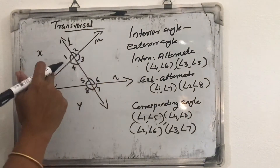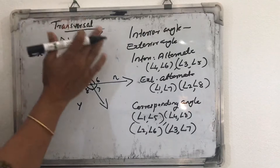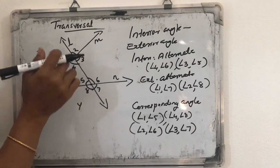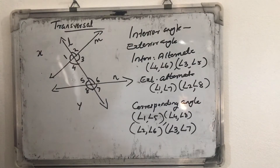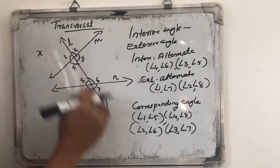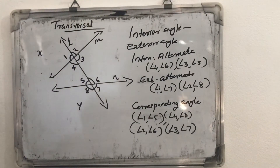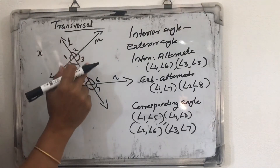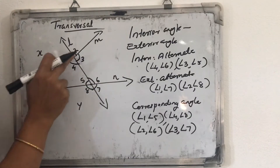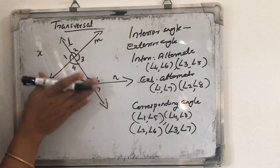So what is the transversal line? A transversal in a plane is a line that intersects a set of two or more lines at distinct points. So here we are discussing: when two lines are cut by a transversal, different angles are formed and those angles have special names. Interior angle means the angles formed in the interior part of those two lines. Exterior angle is the angle formed on the exterior part of those lines.